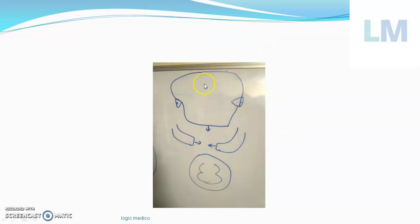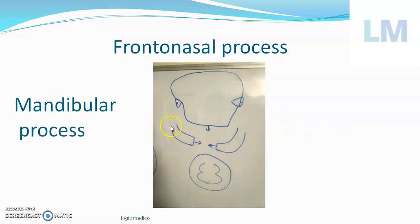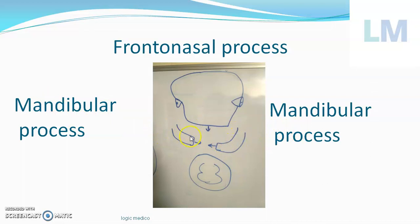From the forebrain bulge, a projection comes downward forming the forehead and nose — this is called the frontonasal process. It is a median, single process coming from above the stomatodium. Below the stomatodium, there are a pair of processes called mandibular processes. This pushes the pericardium down into the thorax — initially the heart is in the neck region.